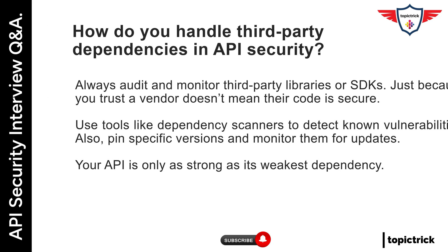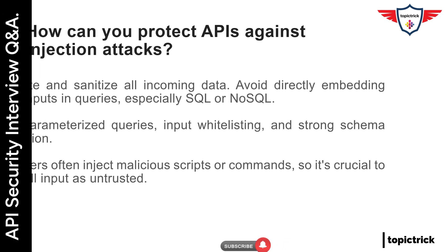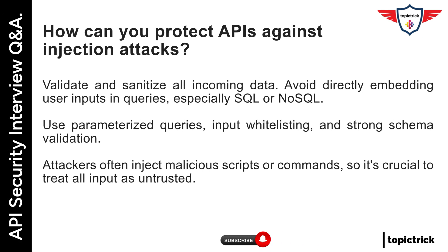How can you protect APIs against injection attacks? Validate and sanitize all incoming data. Avoid directly embedding user inputs in queries, especially SQL or NoSQL. Use parameterized queries, input whitelisting, and strong schema validation. Attackers often inject malicious scripts or commands, so it's crucial to treat all input as untrusted.